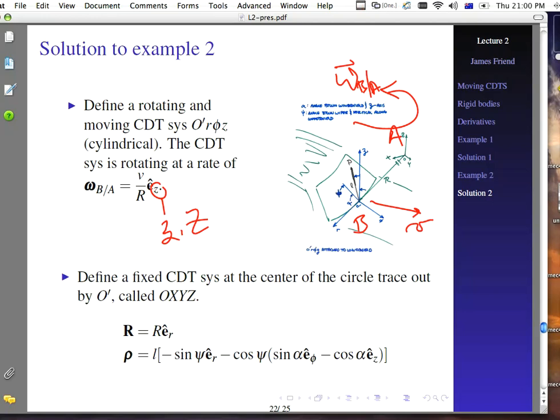So then we'll define a fixed coordinate system at the center of the circle. That's straight stop by O prime. We'll call that cap O, cap X, cap Y, cap Z. So remember we use a relative coordinate system definition. We go from cap O to cap O prime. That's the vector R, and that's just R E sub R, because that's the only component we have to worry about. Remember, we don't need an E sub P or anything other thing like that because the E sub R direction will change to make sure that this cap R vector points directly at O prime at all times.